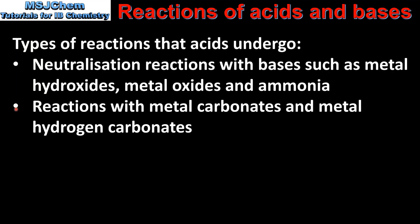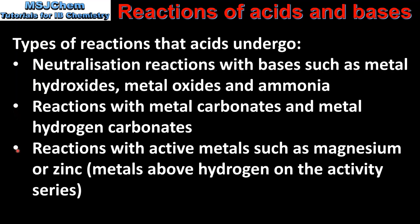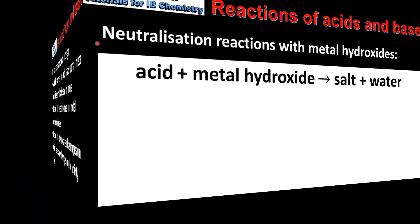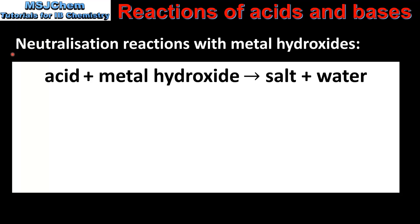Acids also react with metal carbonates and metal hydrogen carbonates. And finally we have reactions with active metals such as magnesium or zinc. So we'll start by looking at neutralization reactions with metal hydroxides. Here we have the general equation for an acid and a metal hydroxide. The products of the reaction are a salt and water.